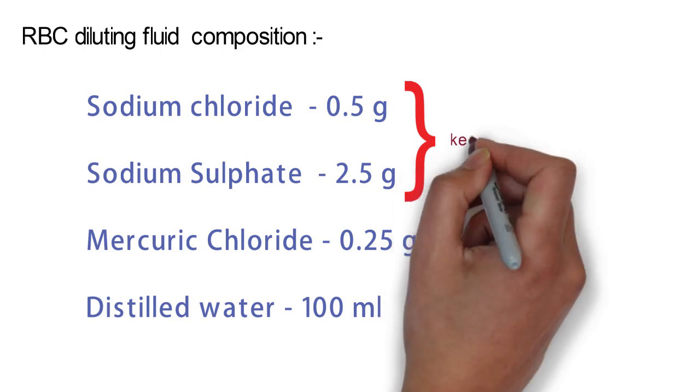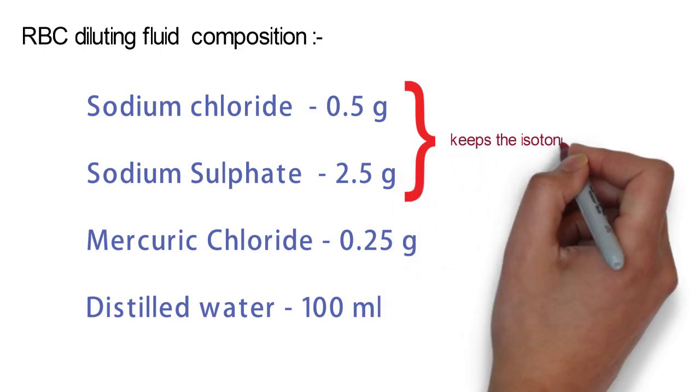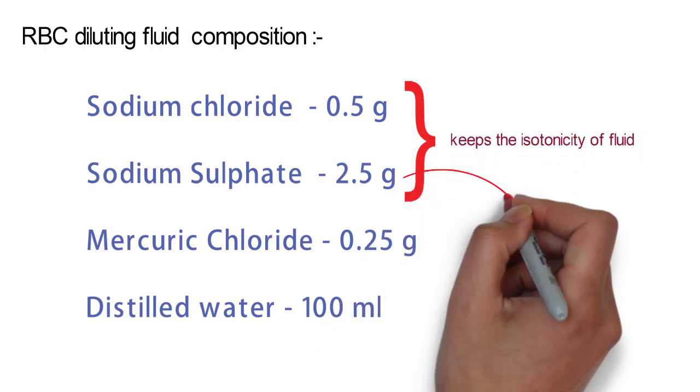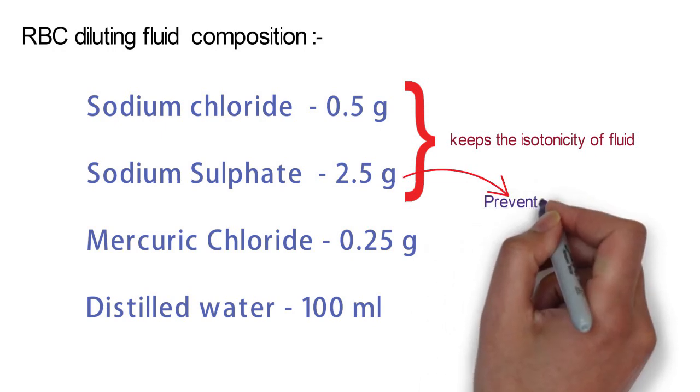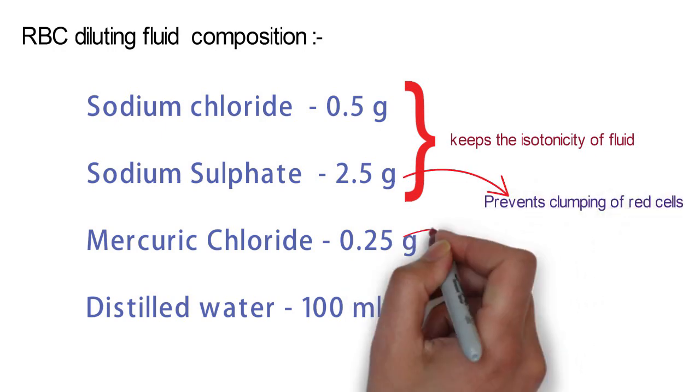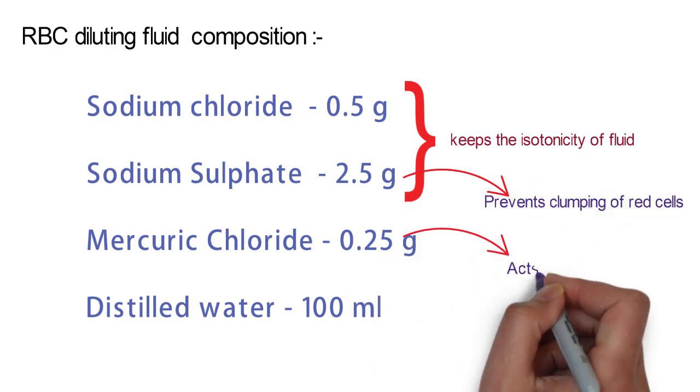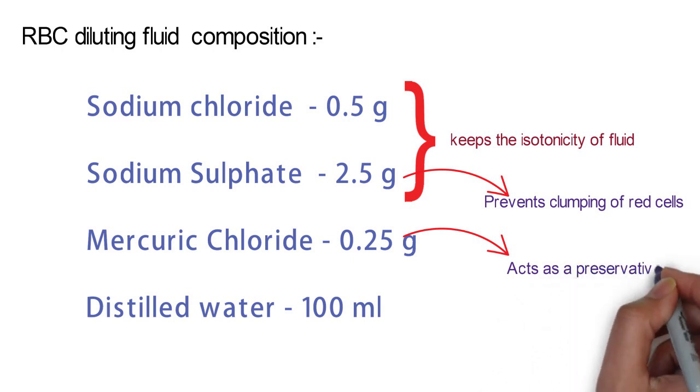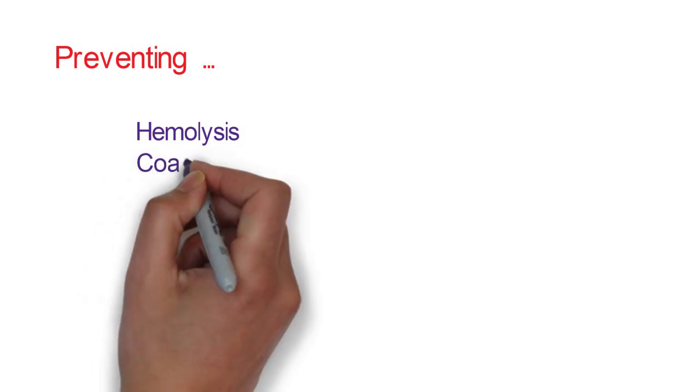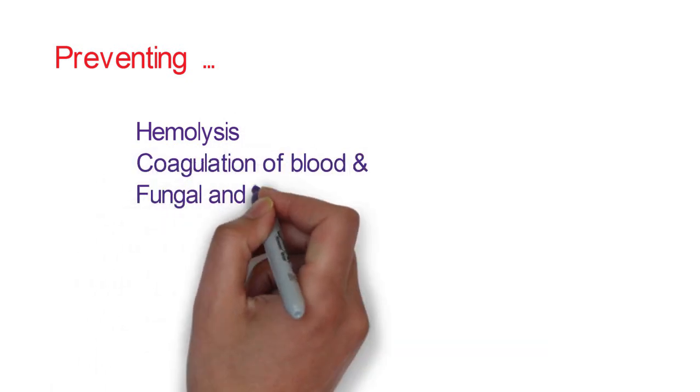Sodium chloride and sodium sulfate together keep the isotonicity of fluid. Sodium sulfate also prevents clumping of red cells. Mercuric chloride fixes the cells and acts as a preservative. So diluting fluid helps in preventing hemolysis, coagulation of blood, and fungal and bacterial growth.